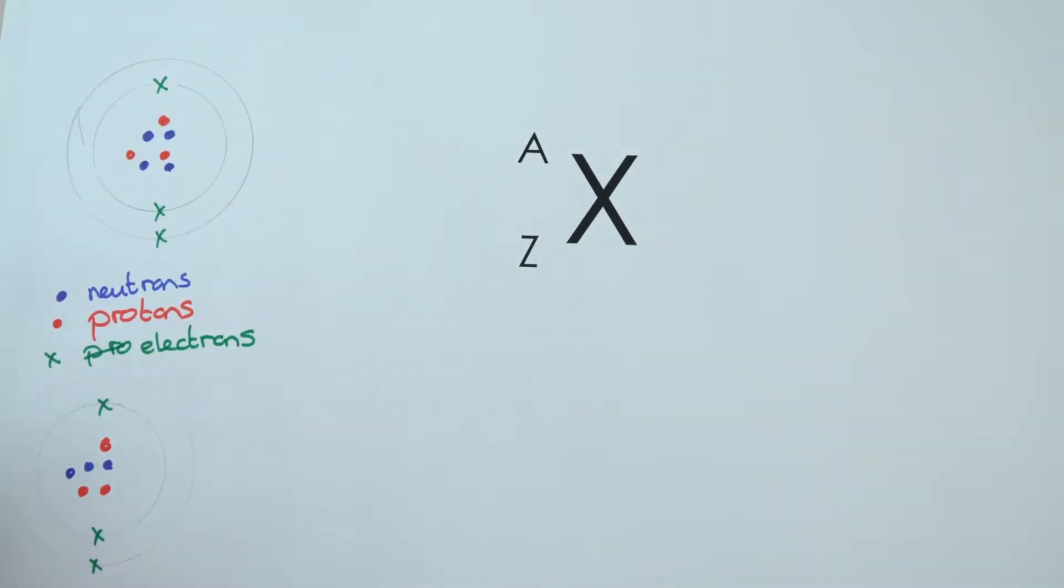Here are two elements that I've drawn. This one up here has four neutrons, three protons, and then three electrons on the outer shell. This one here has three neutrons, three protons, and then also three electrons on the outer shell.